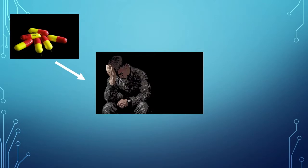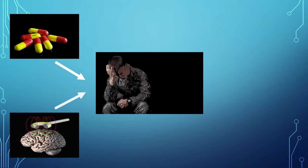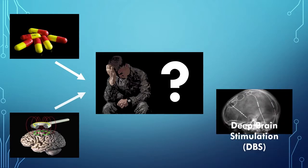This warranted more target-specific methods such as vagus nerve stimulation and transcranial magnetic stimulation. Although these non-invasive techniques improve the efficiency, further research paved way for a more efficient method called deep brain stimulation or DBS.